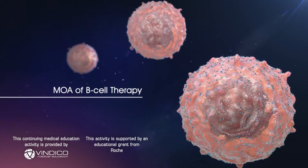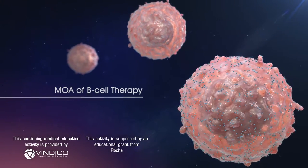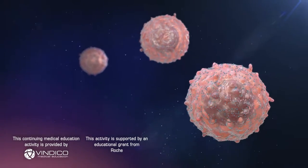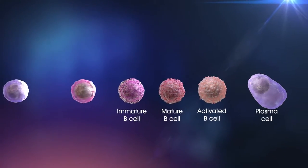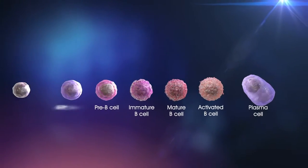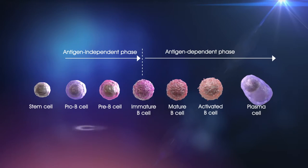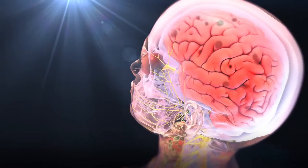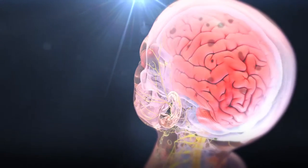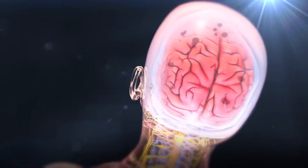Mechanism of action of B-cell therapy. B-cells are extremely diverse members of adaptive immunity and play a major role in mediating tissue damage in MS. These highly selective clonally restricted B-cells are believed to actively traffic between the periphery and CNS in MS patients.